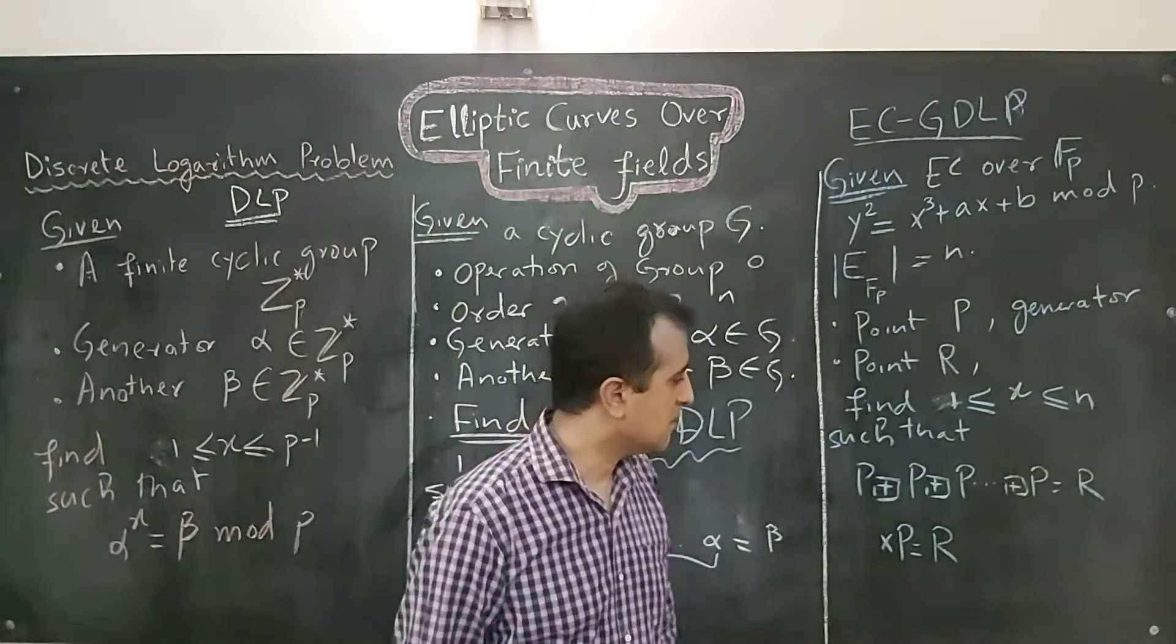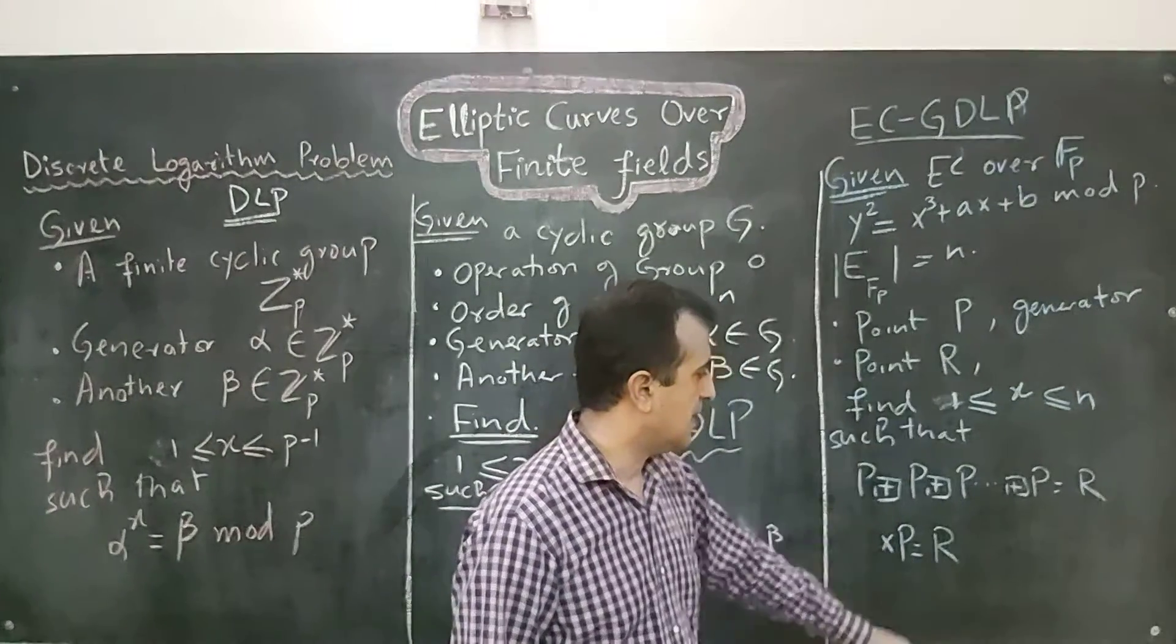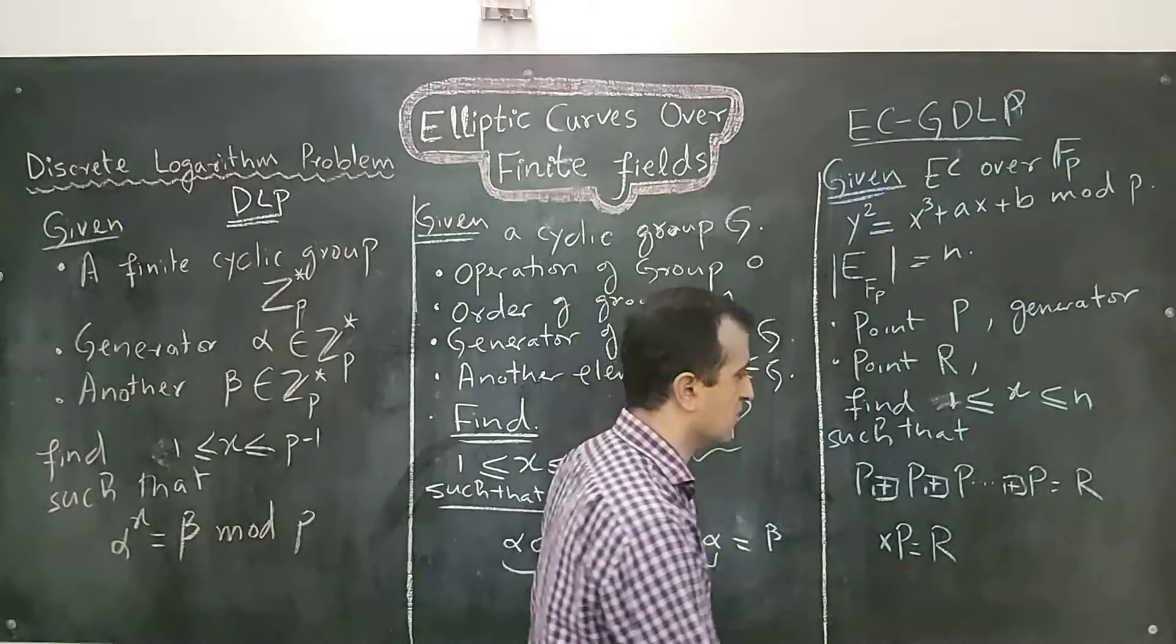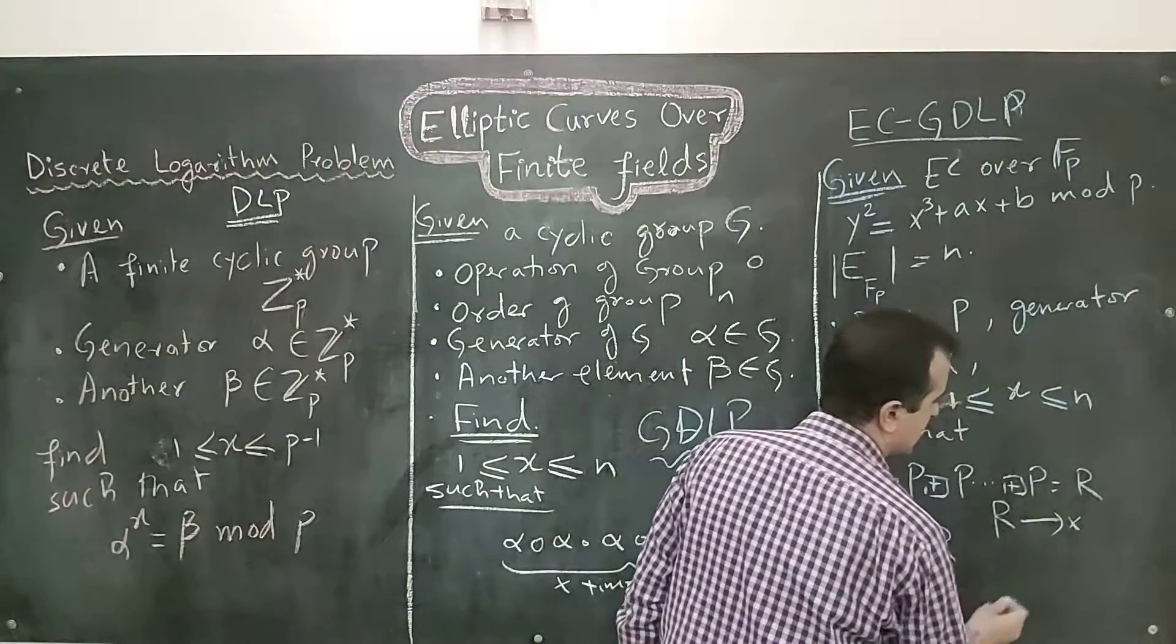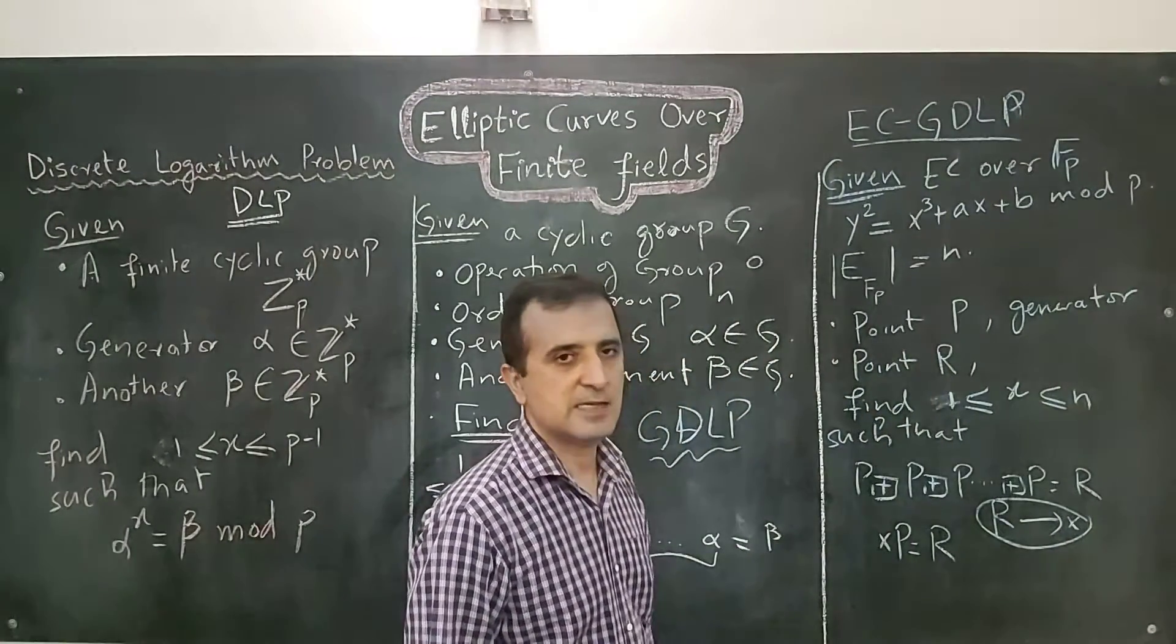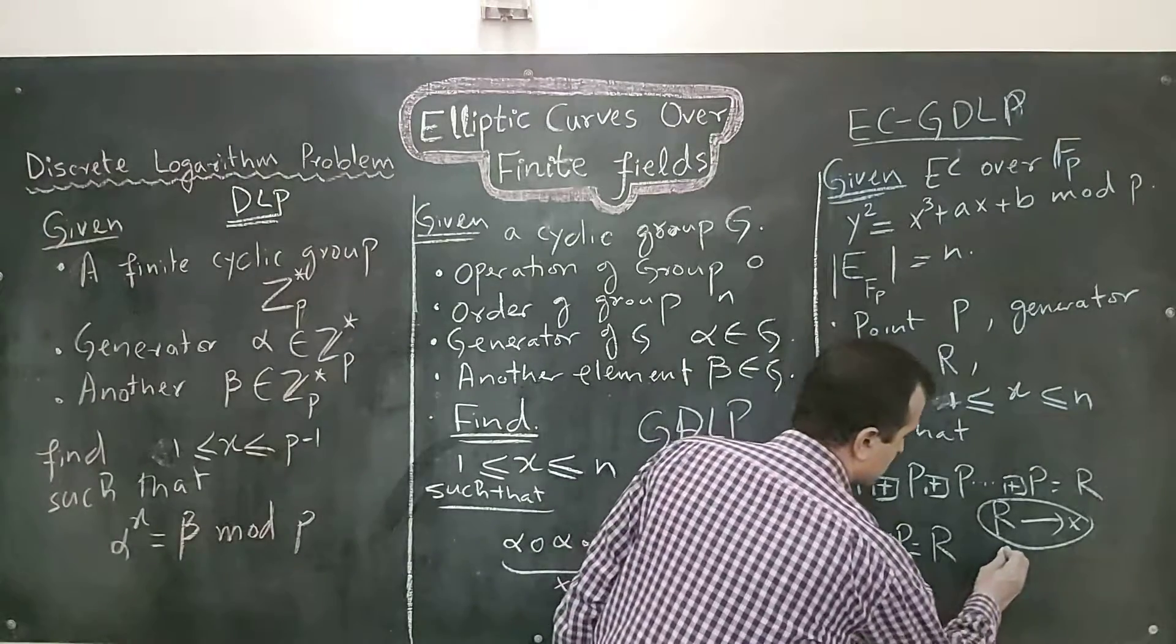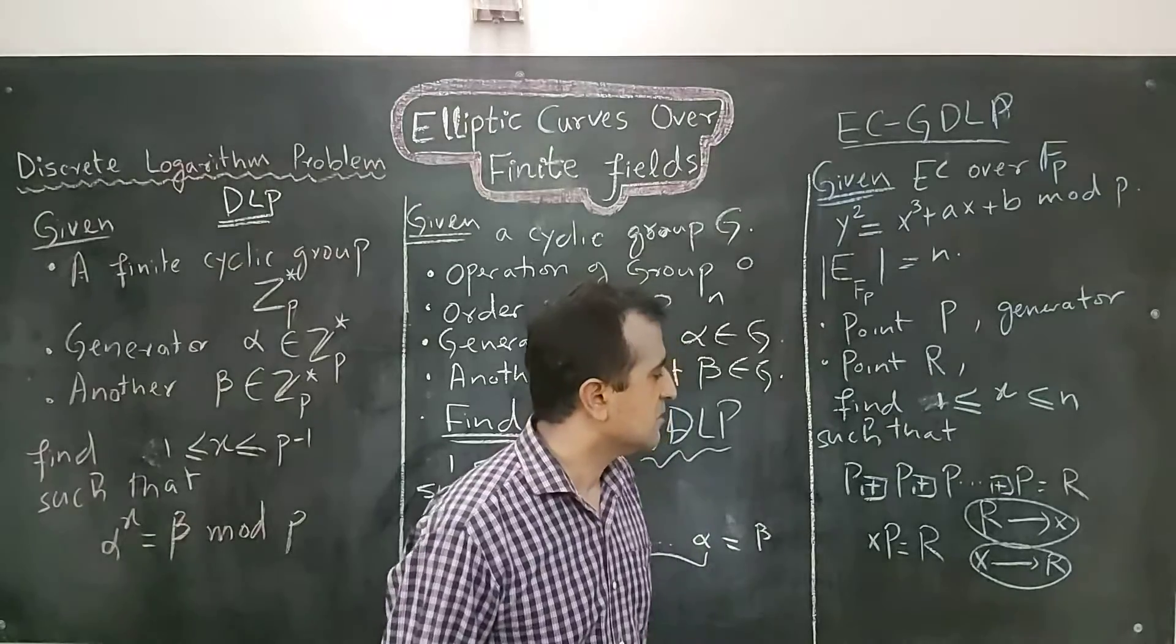This is also a one-way problem because given R, it is very difficult to find x. So, from R to x is very difficult. However, given x, it is easier to find R.